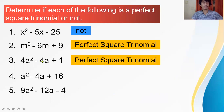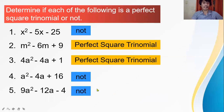Number 3 is a perfect square trinomial: the first and last terms are perfect squares, and the middle term is twice the product of the square root of the first and last term. Number 4: a squared minus 4a plus 16 — the answer is not, because the middle term is not twice the product of the square root of the first and last term. Number 5 is also not, because obviously the first term is negative — the first term is always positive.